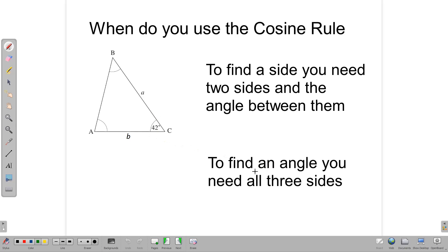If we want to find an angle, we need all three sides of the triangle to be known. So if we want to find a side here, we need to know a and b and we need to have the angle between them. And if we want to find the size of an angle, for example angle A here, we need to know all three sides: a, b, and c.